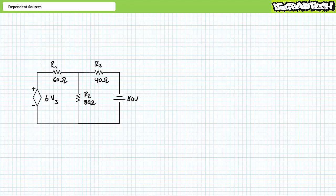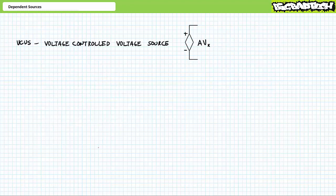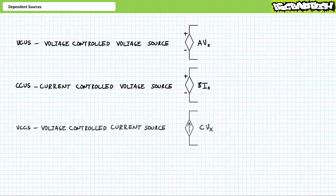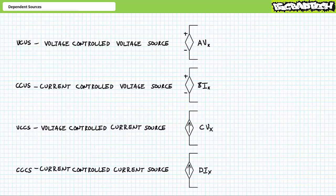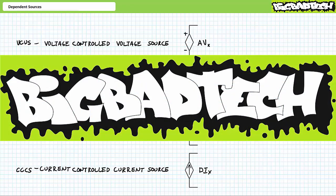For now, this lecture was intended as a quick introduction to dependent sources. In conclusion, this lecture introduced four types: voltage-controlled voltage sources, current-controlled voltage sources, voltage-controlled current sources, and current-controlled current sources. Remember to review these concepts as often as you need to really drive it home. Imagine how well lab will go if you know what you're doing. Thank you for your attention and interest — we'll see you in the next lecture. Remember to tell your lab partner about this resource and check out the Big Bad Tech channel for additional resources and updates.